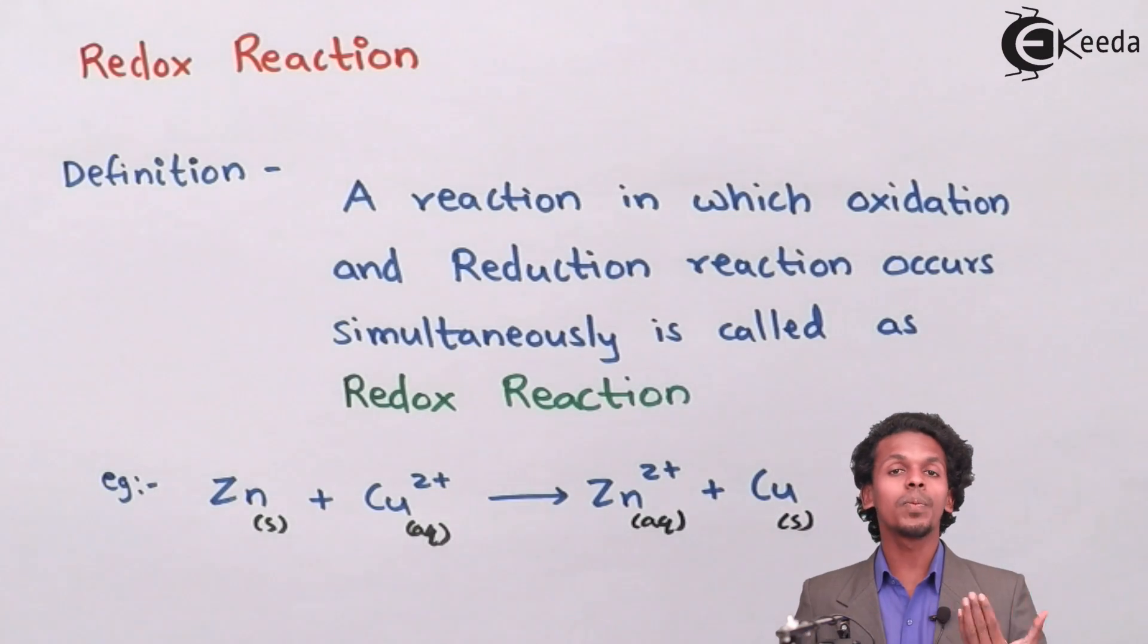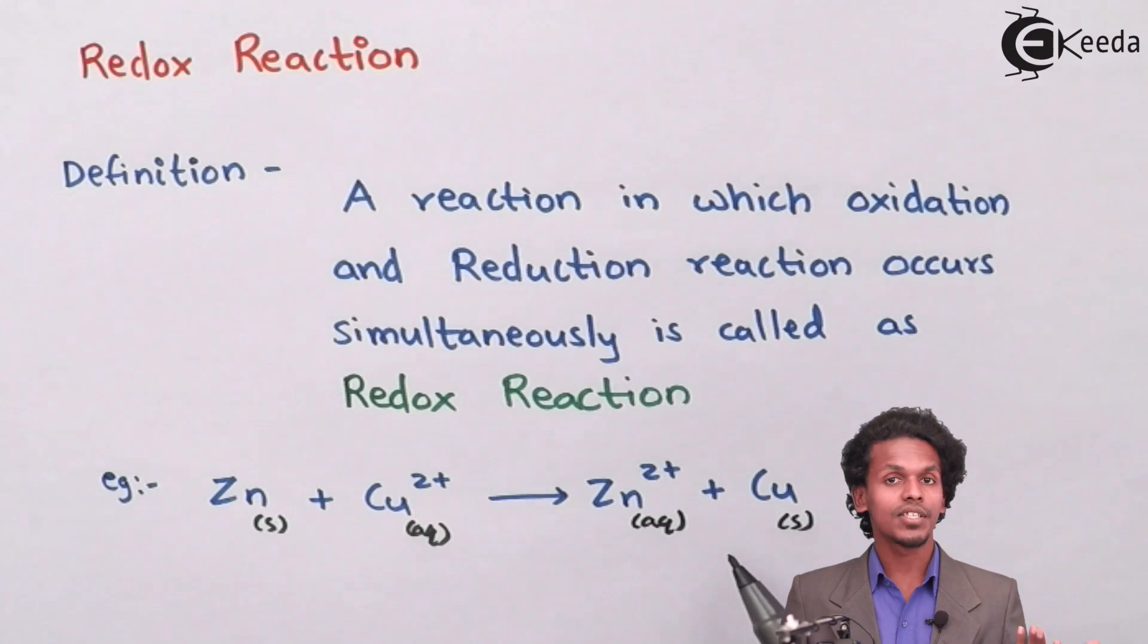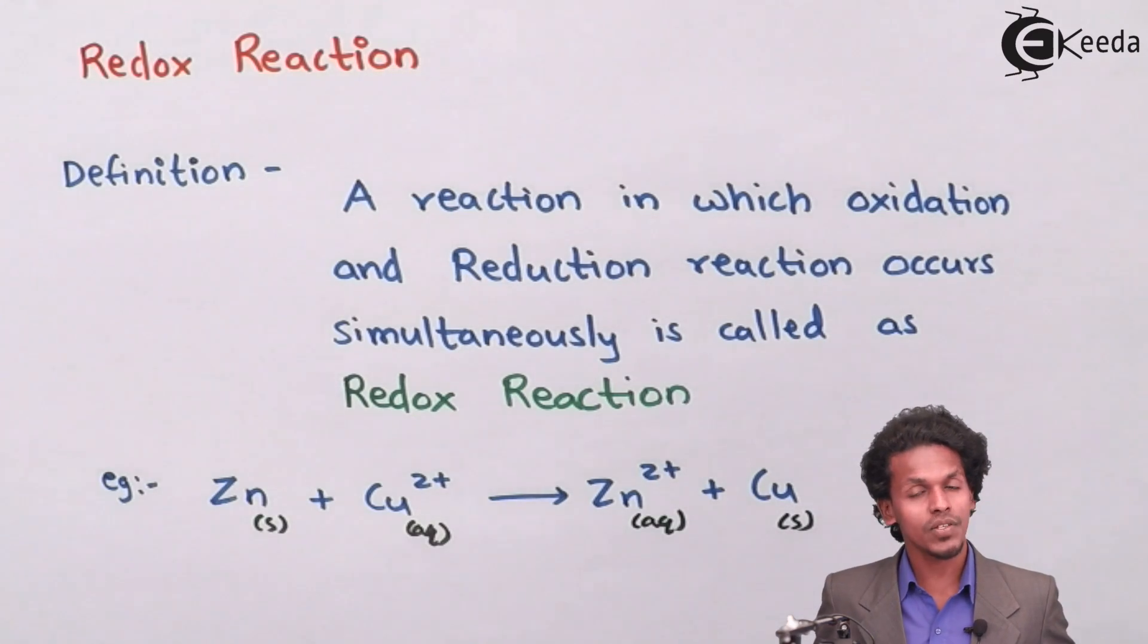So in this process the 2 plus have accepted two electrons to convert into Cu raised to zero that is Cu solid, copper solid.